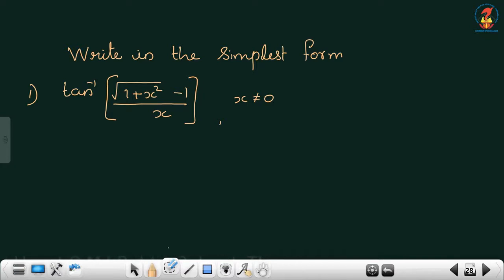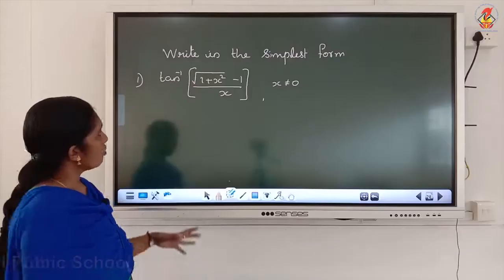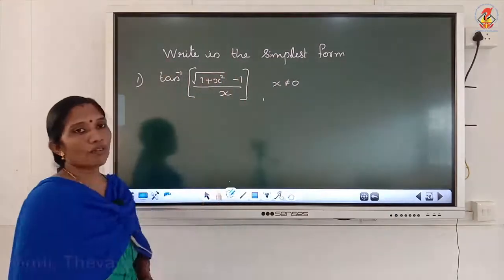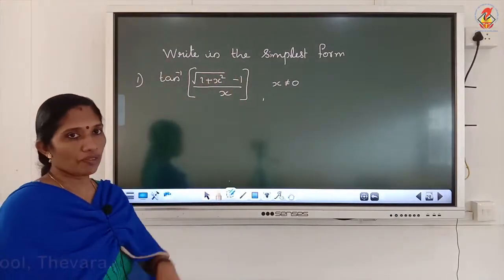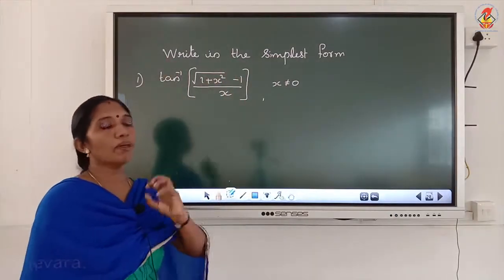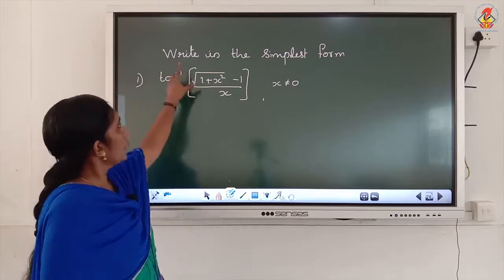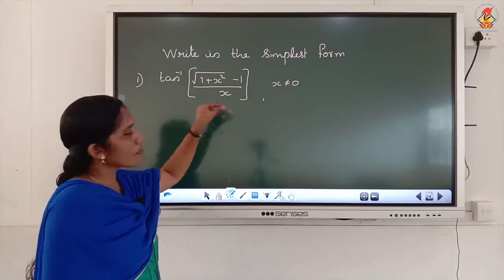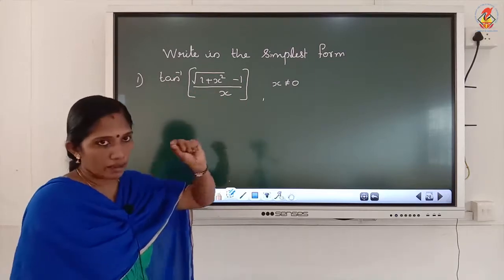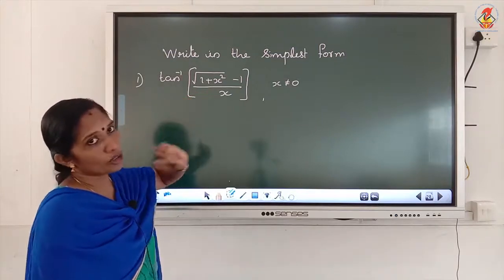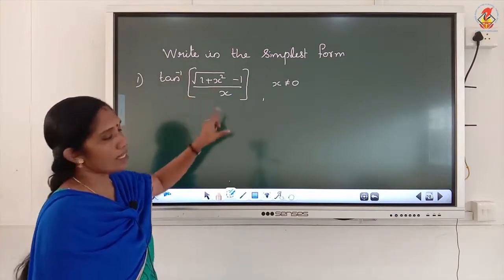Write in the simplest form. Since the outside function is tan inverse, we convert the bracket in terms of tan to get a simplified answer. We can convert this bracket in terms of tan by using a suitable substitution for x.